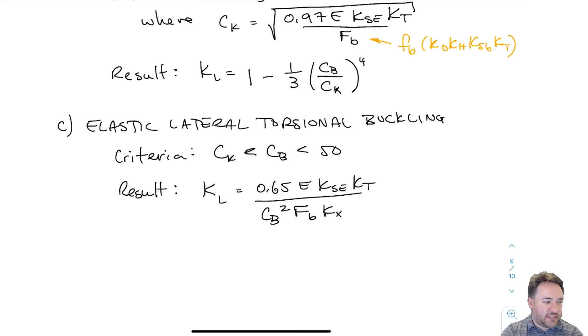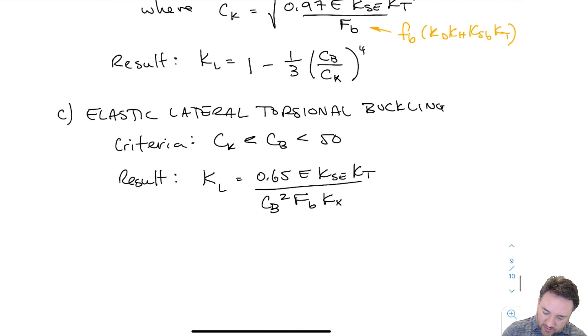If we fit within that range of bending slenderness, then KL equals 0.65 E KSE KT, which is Young's modulus modified for moisture, divided by CB squared times FB times KX. KX is our curvature factor, which is 1.0 if the beam is straight.